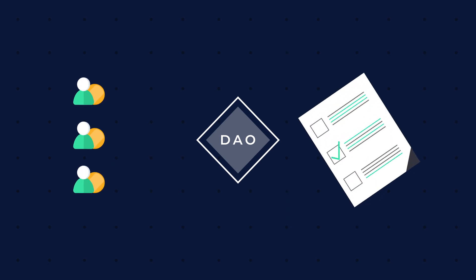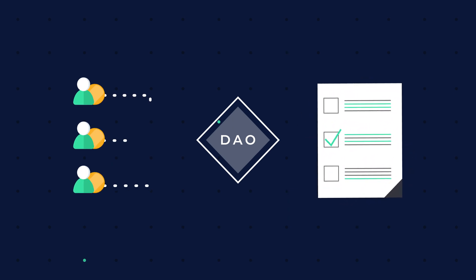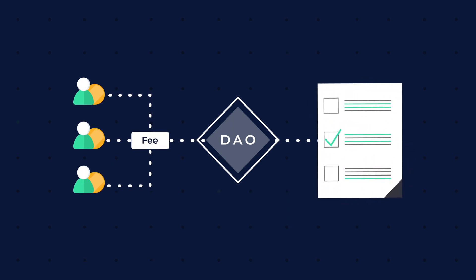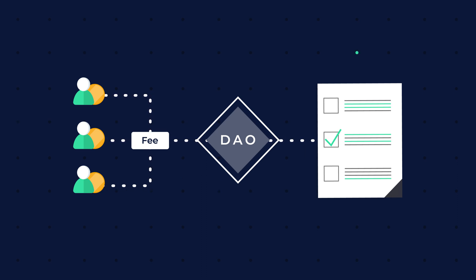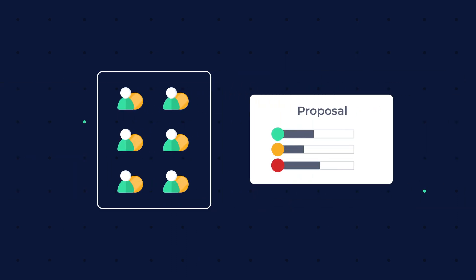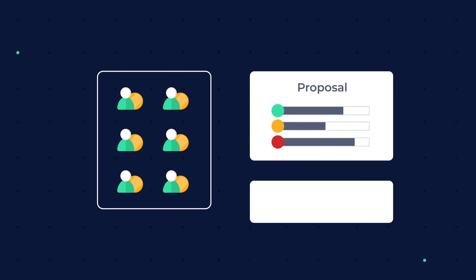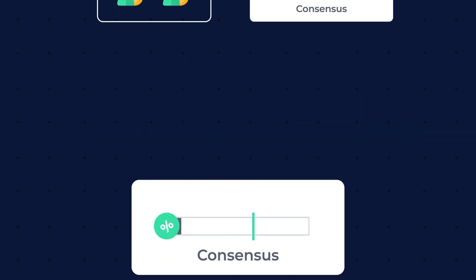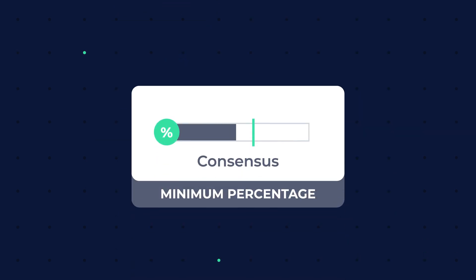All users who purchased a stake in a DAO have a right to make proposals regarding its future by paying a monetary fee for each proposal. Then the stakeholders would vote on the proposal. To carry out the winning proposal, the majority must reach a consensus. There is a minimum percentage required to reach consensus, and it can vary per DAO.